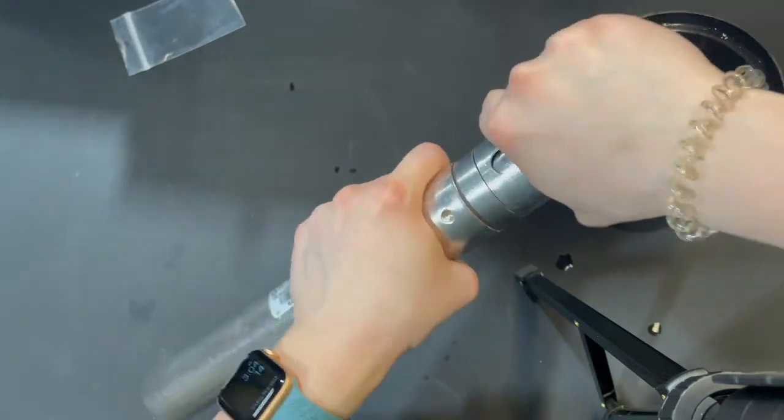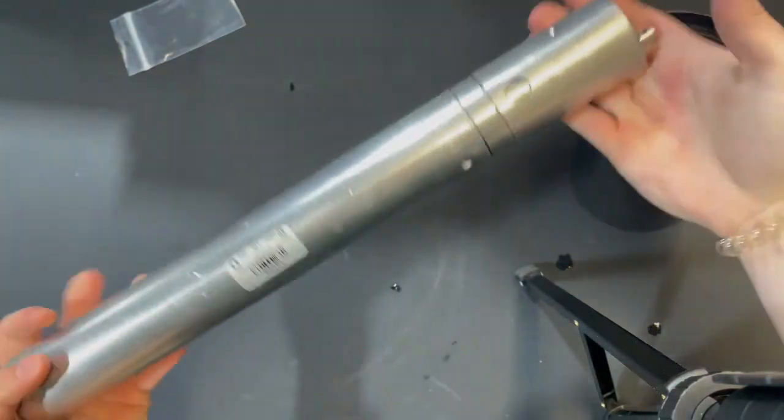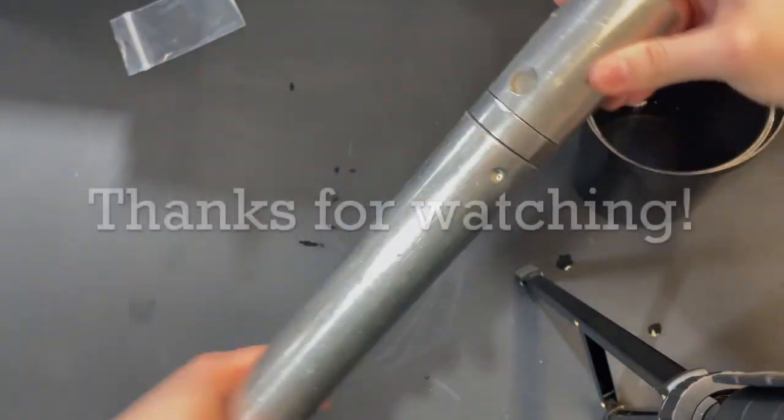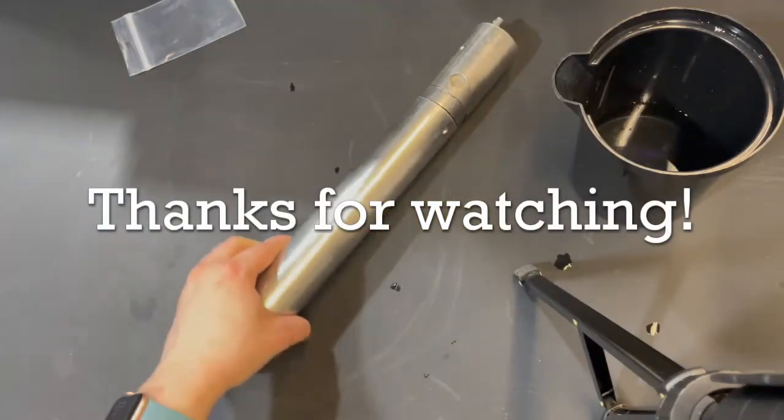Then we're going to insert the second sleeve. Again, there's a notch and groove system. And there you go. Fully assembled SamplePro bladder pump. Thanks for watching!